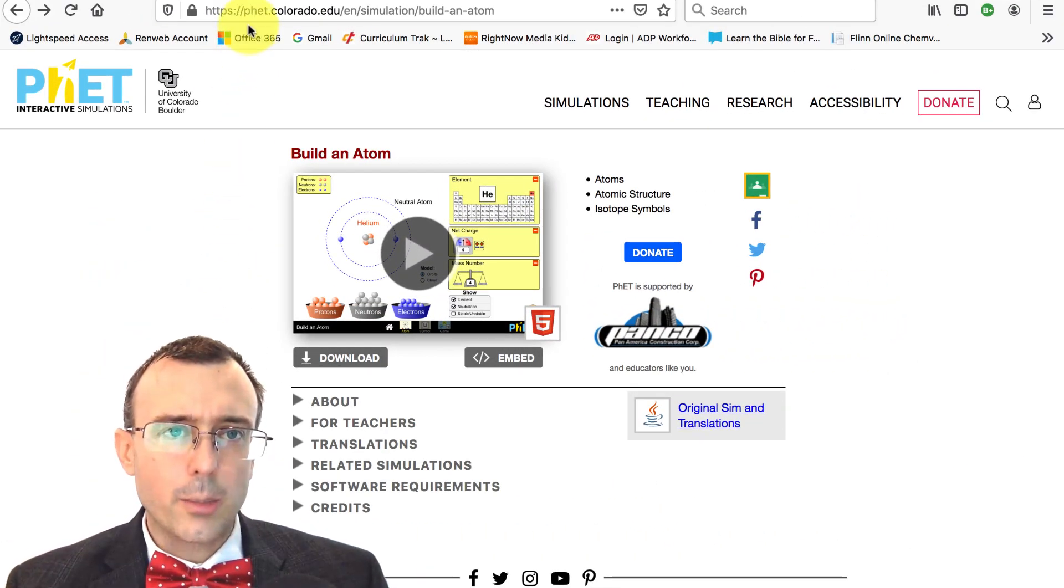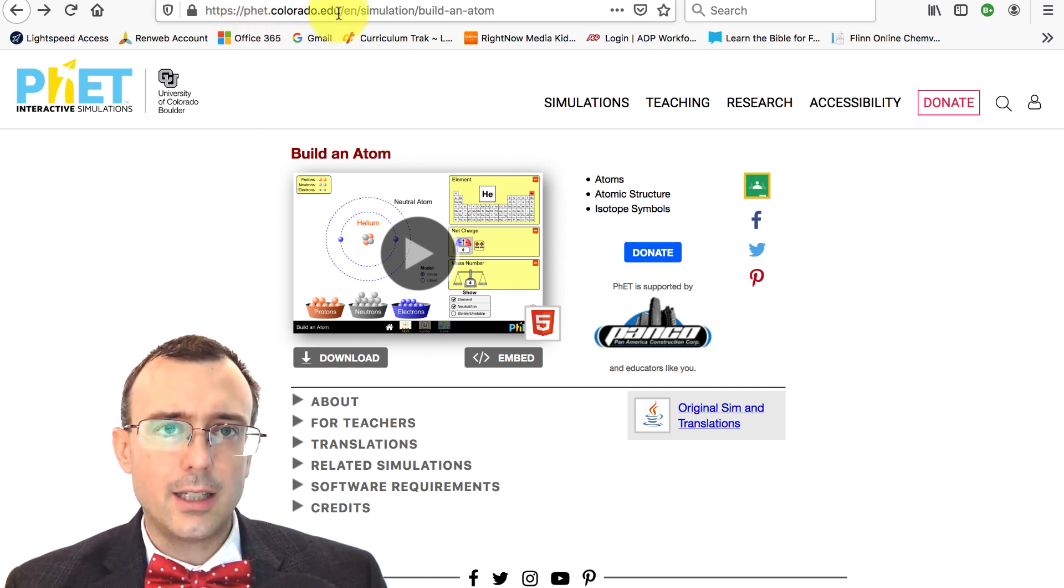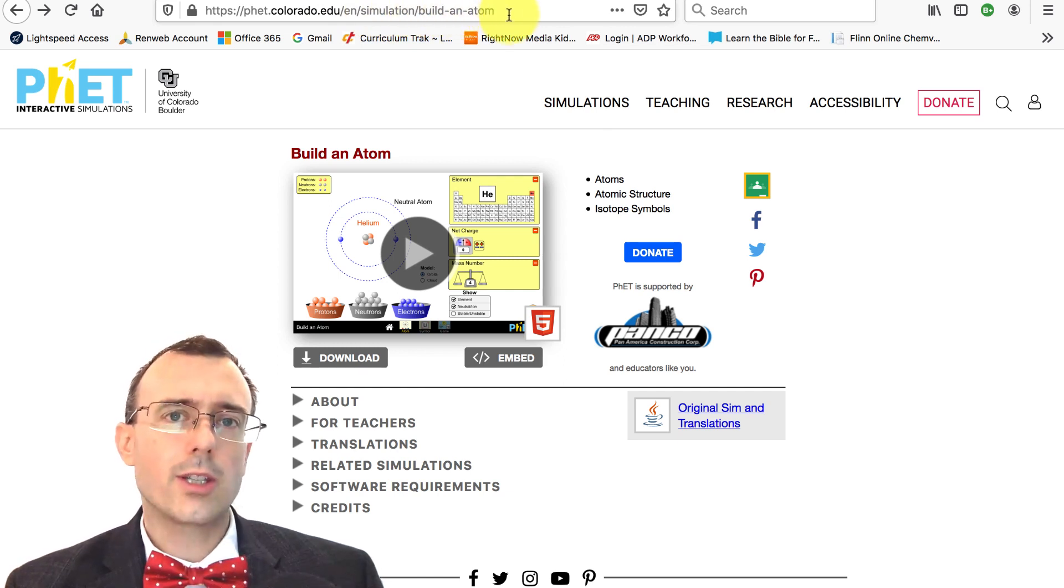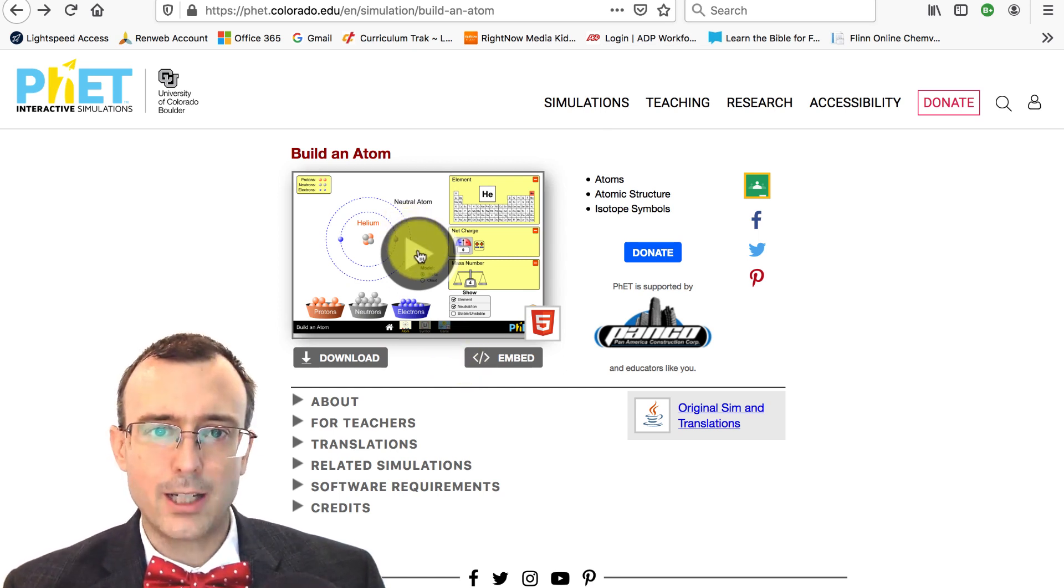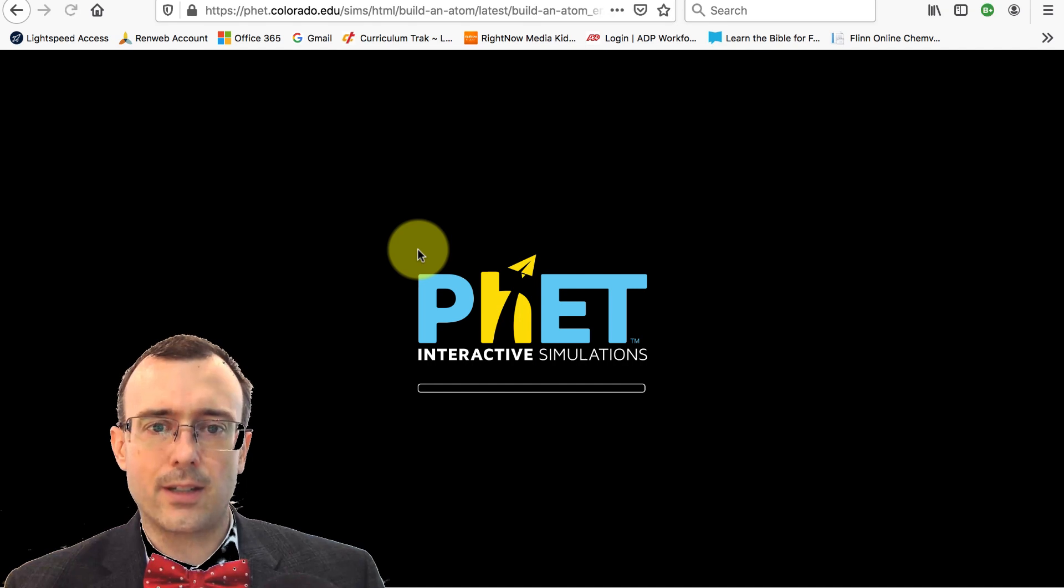So let's just go there now. All right. So what you can do in your browser, you can type phet.colorado.edu/en/simulation/build-an-atom, or you could just simply do a search for PhET and build an atom. And then this will pop up. So you should see something like this.